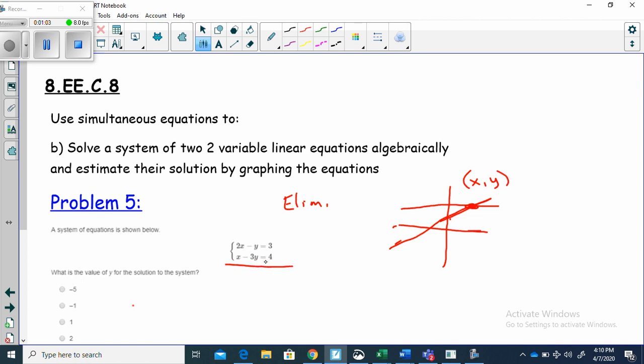And if I look at this, let's see, I've got a 2X and a 1X here. What if I multiply everything here by negative 2 so I can have a positive 2X plus a negative 2X?